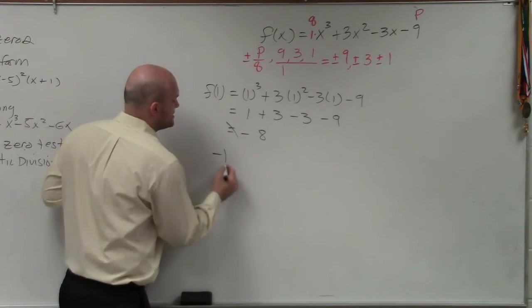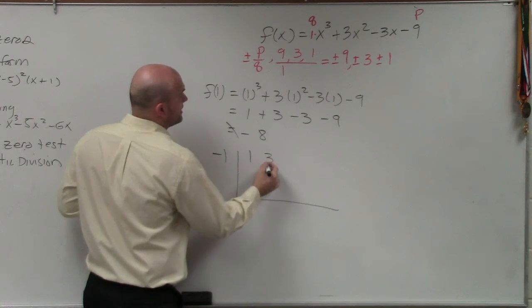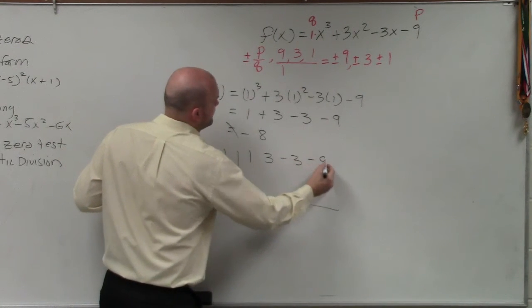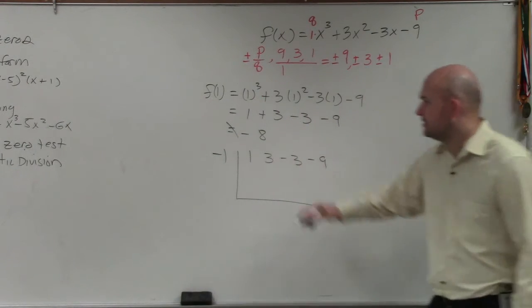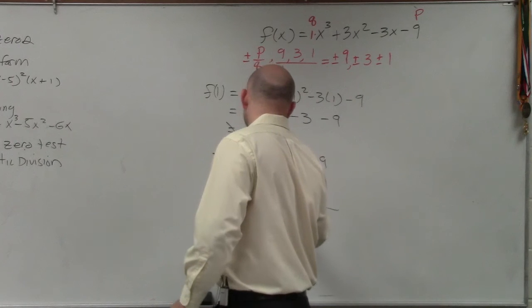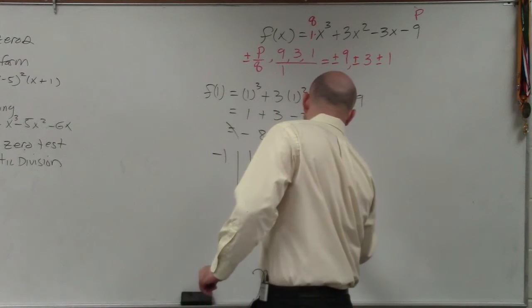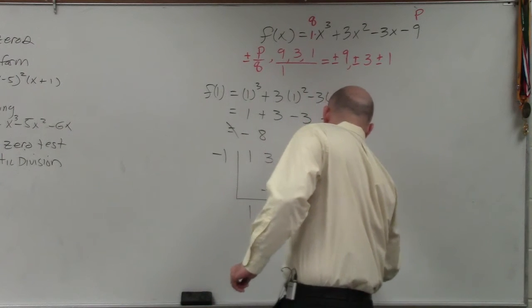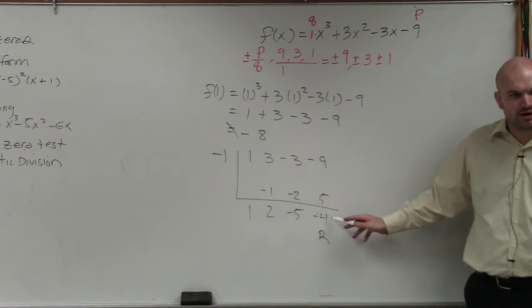Or you could also just test negative one and use synthetic division, see if it has a remainder. Some of you guys might really like synthetic division. So you might say I just like doing synthetic division. So you bring down the one. One times one is negative one. Two, negative two, negative five, positive five, negative four. Again, negative one doesn't work. I have a remainder of four.